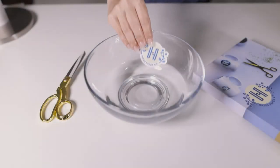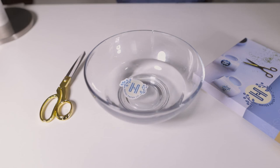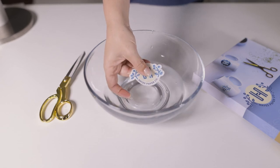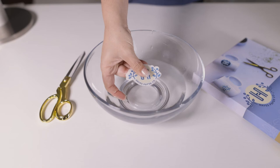Soak your decal in room temperature water. Let your decal sit in the water for about 30 to 60 seconds. Test your decal by rubbing it between your thumb and index finger. If the center of the decal slides easily, then you know that your decal is ready to be applied. If the decal is not sliding, leave it in the water for just a bit longer.